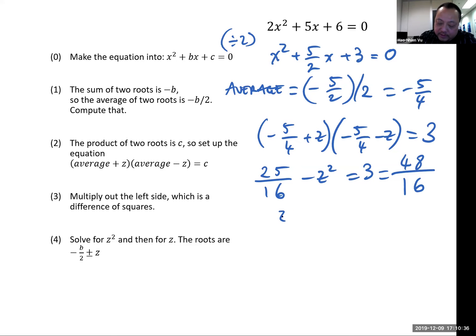So that gets z squared is equal to 25 minus 48, which is negative 23 over 16.